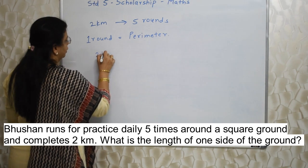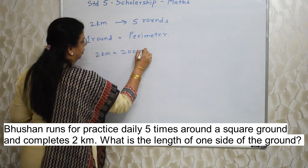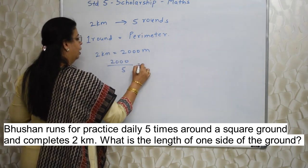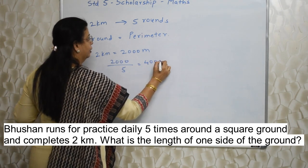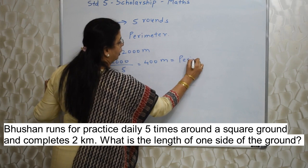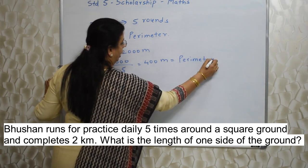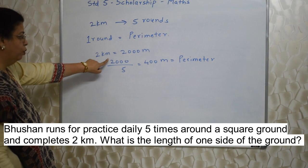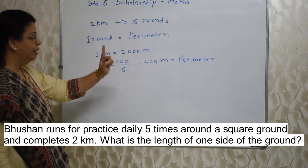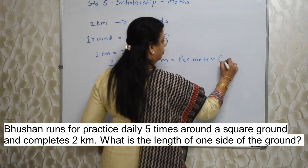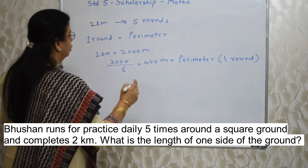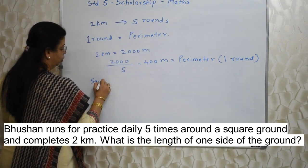Two kilometers is 2000 meters. If I divide 2000 by five, that is 400. So 400 meters is the perimeter, because 2000 meters is for five rounds. Dividing by five gives one round, which equals the perimeter — 400 meters — for that square ground.